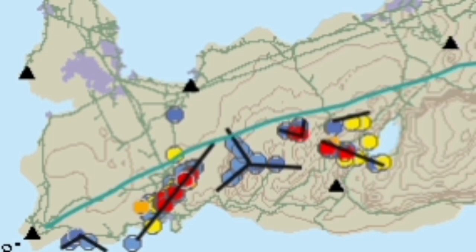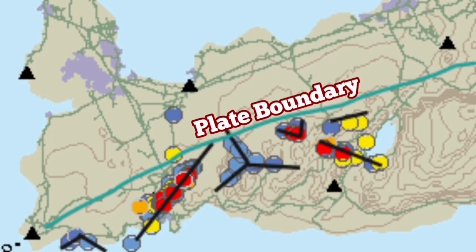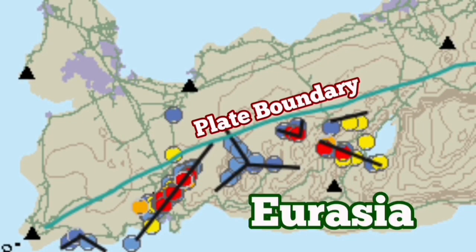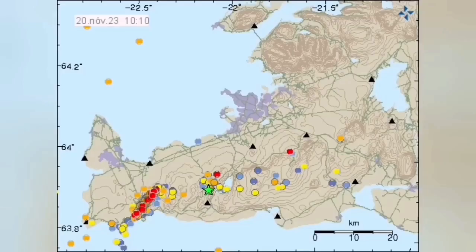These are all inside the Eurasian plate, where we have the pull of the plate subduction on the Pacific and the Amur plate, pulling down this direction.